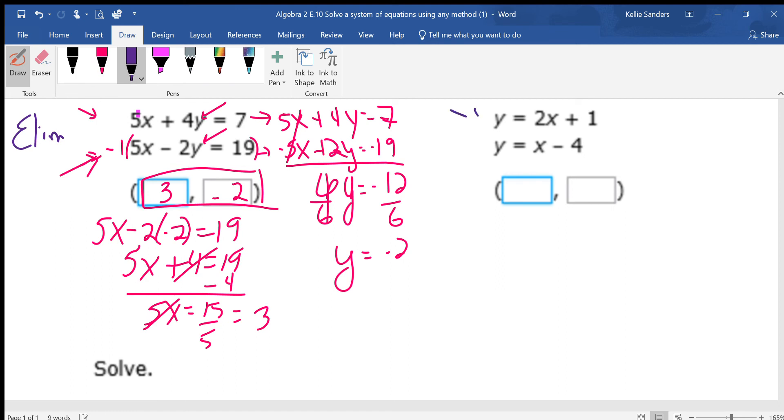This problem, because we already have y equals and y equals. If y equals 2x plus 1 and y equals x minus 4, then 2x plus 1 is going to equal 1x minus 4. They're going to equal themselves because y equals y.